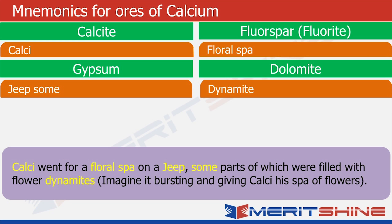Now that we have both story and associated words in mind, let us recall the names of ores. Calci or calci was calcite. Floral spa reminded us of fluorspar. Jeep will remind us of gypsum. And dynamite will of course remind us of dolomite.